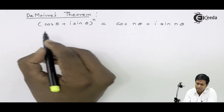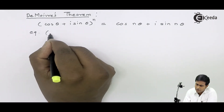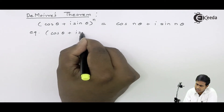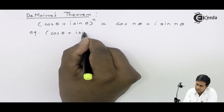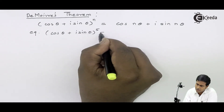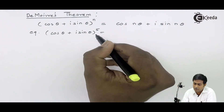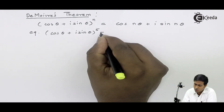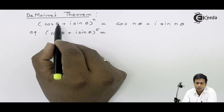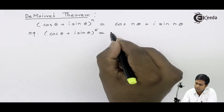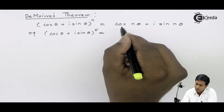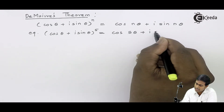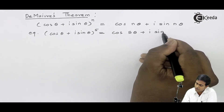Let's take some examples. If you have a complex number cos θ + i sin θ raised to 5 — meaning you want to find the 5th power of this complex number — then according to De Moivre's theorem, it will become cos(5θ) + i sin(5θ).